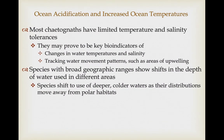Chaetognaths have very limited temperature and salinity tolerances. Knowing the tolerance ranges for different species and tracking where those species occur allows biologists to use them as key bioindicators of changing water temperatures and salinities, as climate change alters ocean temperatures, salinities, and currents. Species with broad geographic ranges are showing shifts in the depths they occupy, forced into deeper, colder waters as their distributions move away from warming polar regions — sometimes losing access to shallower zooplankton swarms that are now too warm.